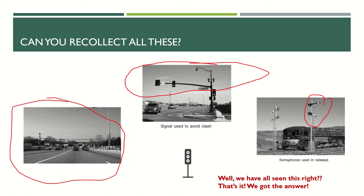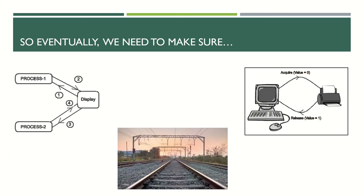The term 'resource' was used — resources can be a display, a printer, a variable, or anything that processes want to share. A process is a file or program in execution. If a resource is available, a process can use it, but if another process also wants it at the same time, there could be a clash. This is what we need to avoid, and this is called process synchronization.